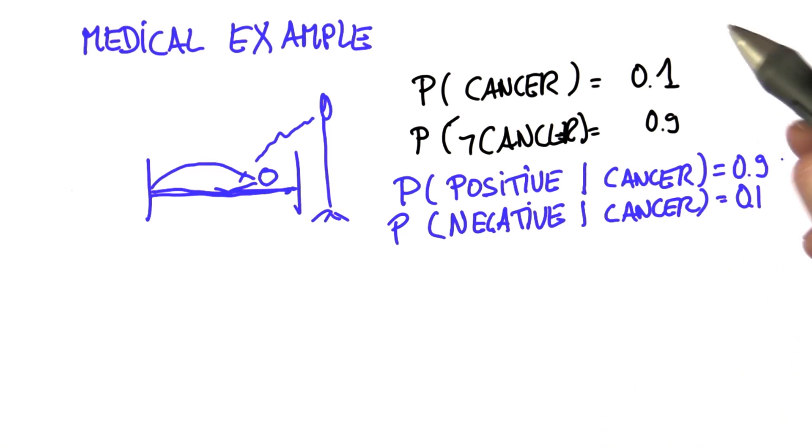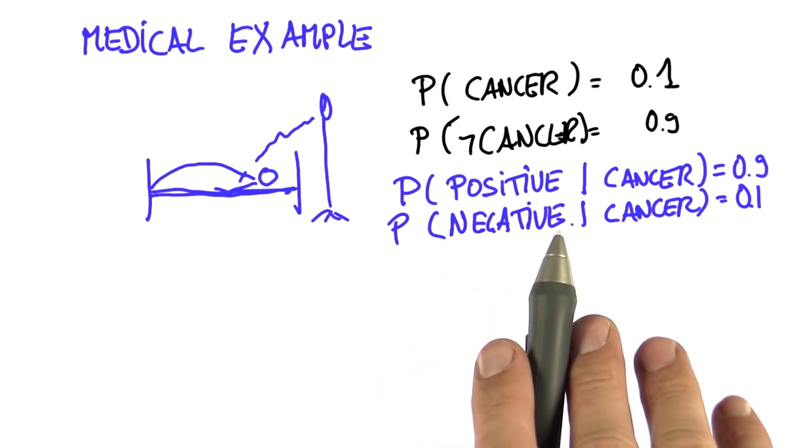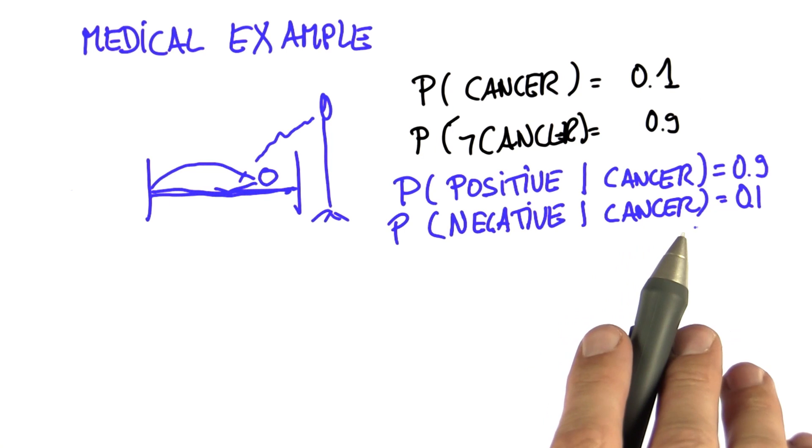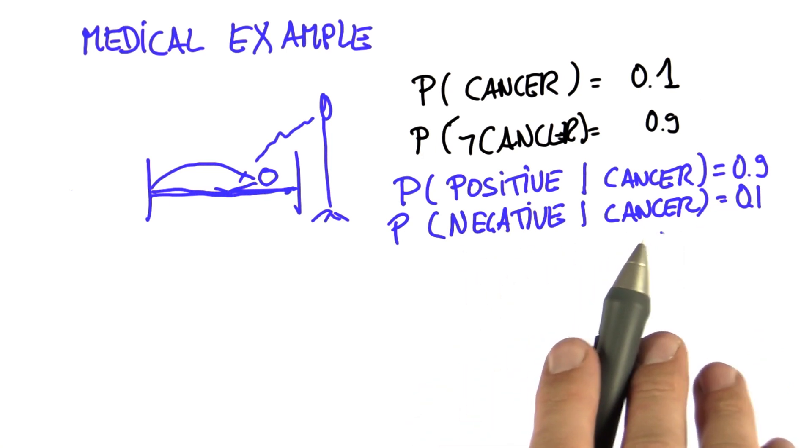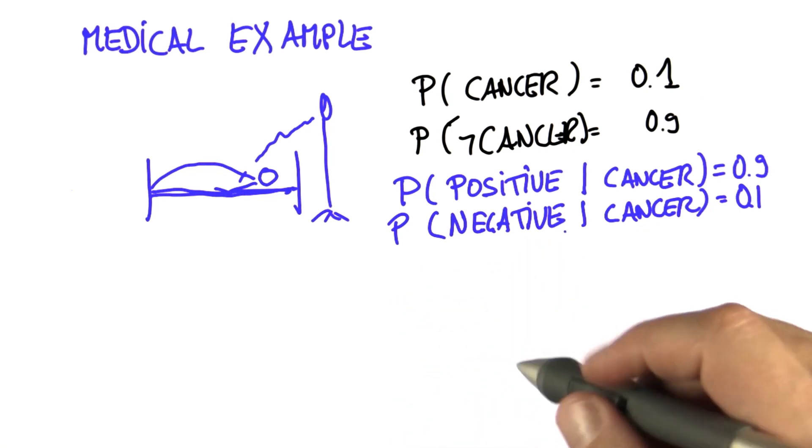I've just given you a fairly complicated notation that says the outcome of the test depends on whether the person has cancer or not. That is more complicated than everything else we talked about so far. We call this thing over here a conditional probability.